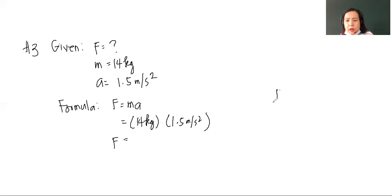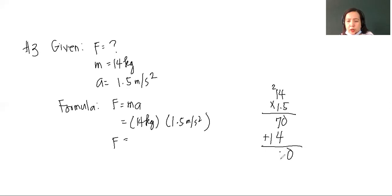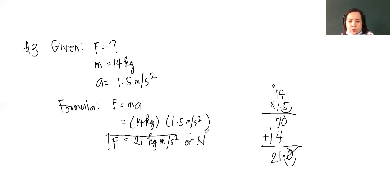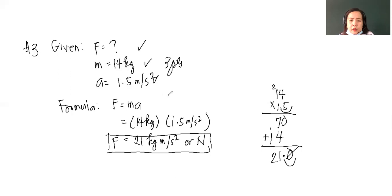In your scratch paper, solve 14 times 1.5: 5 times 4 is 20, carry 2; 5 times 1 is 5 plus 2 is 7; 1 times 4 is 4; 1 times 1 is 1. Then count the decimal point — one decimal place — and place the decimal point accordingly. The answer is 21 kilogram meter per second squared, or 21 newtons. Do not forget to enclose your answer in a box. For our points: three points for the given, two points for the formula, two points for the substitution, two points for the final answer, and plus two for neatness, for a total of 11 points.